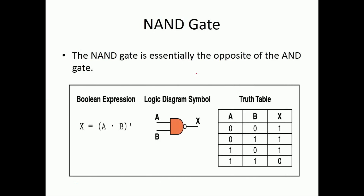Next is NAND gate. NAND gate is the reverse of AND gate — it is a combination of AND gate with NOT gate. The logic symbol shows an AND gate with a bubble representing the NOT gate. So NAND gate has the inverse output of AND gate. Where AND gate outputs 0, 0, 0, 1 — NAND gate outputs 1, 1, 1, 0. The output of the AND gate is given to the NOT gate to get the NAND gate.